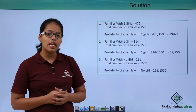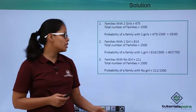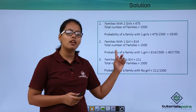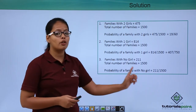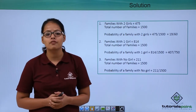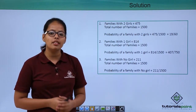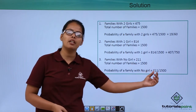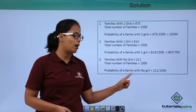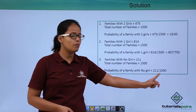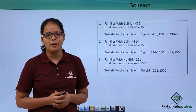In the third case, you need to find the probability of families with no girl. There are 211 families with no girl, and the total number of families available is 1500. The total number of ways that event can occur — where there is no girl in a family — is 211, so the probability is 211 divided by 1500.